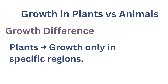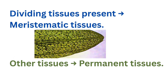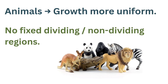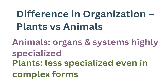Another important difference lies in their growth pattern. In plants, growth is limited to certain regions only — some tissues keep dividing throughout life, localized in specific regions — and based on this property, plant tissues are classified into two types: meristematic tissues and permanent tissues. In animals, cell growth is more uniform, with no clear division between regions where cells divide and regions where they do not. Animals also have organs and systems that are highly specialized, whereas even the most complex plants have body parts that are not as specialized.